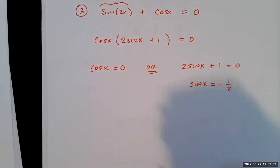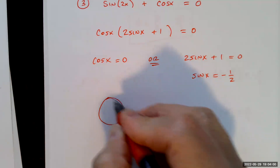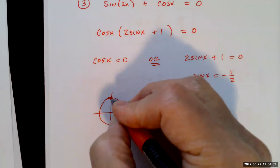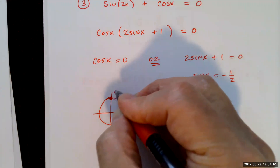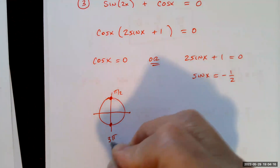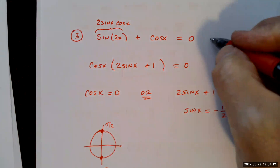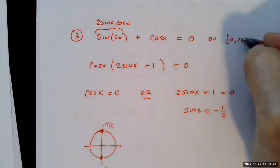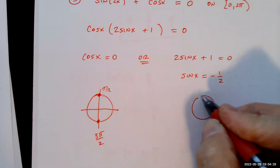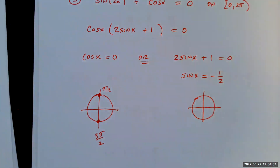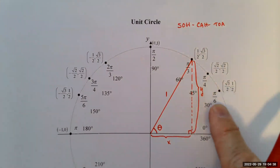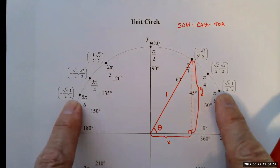On the unit circle, cosine of x equals 0 when the x-coordinate is 0 — that's at π/2 and 3π/2. For sine of x equals negative 1/2: the y-coordinate is positive 1/2 at π/6 and 5π/6, so it is negative 1/2 at 7π/6 and 11π/6.